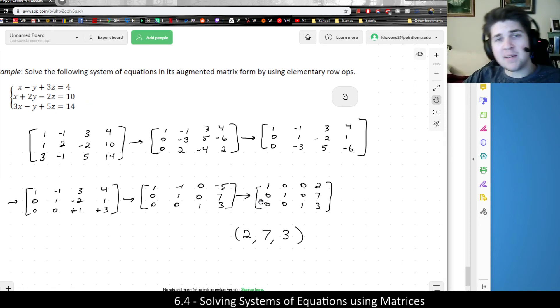And now to check myself, because I did that all pretty quickly, just as a personal challenge, did this actually work? So if I did it the old-fashioned way, I could plug it back in. This would give me two minus seven plus nine. That's indeed four. I could plug it in here. Two plus 14, 16. 16 minus six, 10. Yes. And then six minus seven, negative one. Plus 15, 14. Yes. So it indeed worked.